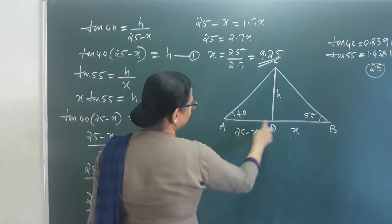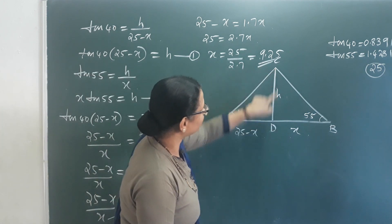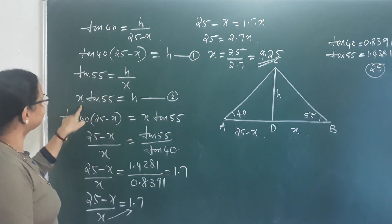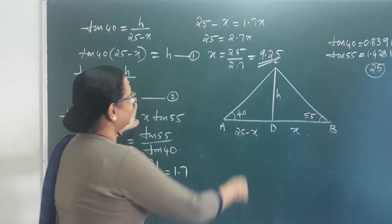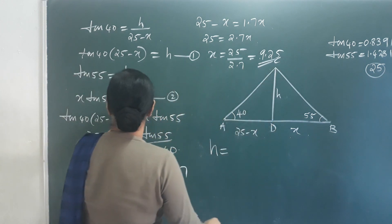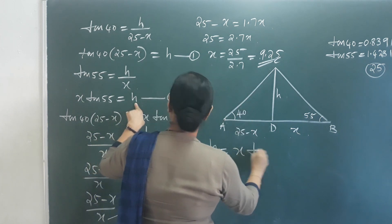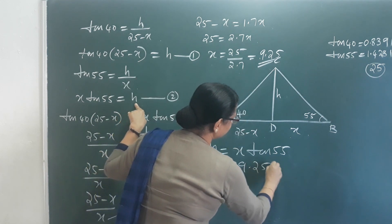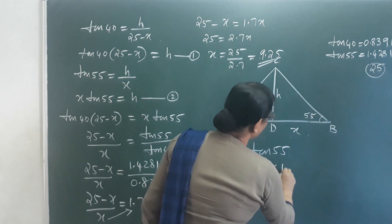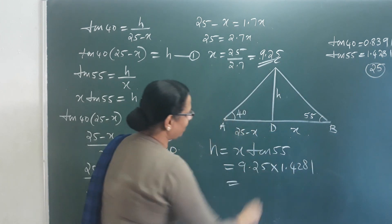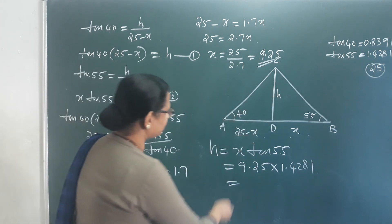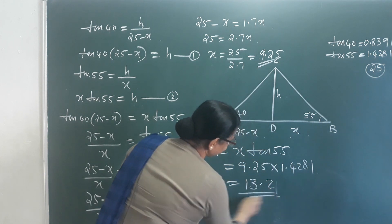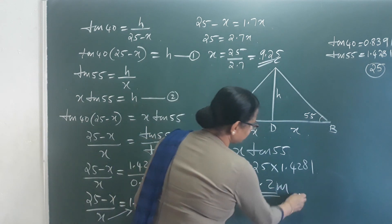That means we have to find the electric post height using Equation 2: X into tan 55 equals H. Substituting X equals 9.25: H equals 9.25 into tan 55, and tan 55 is 1.4281. Multiplying gives the electric post height as 13.20, that means approximately 13.2 meters.